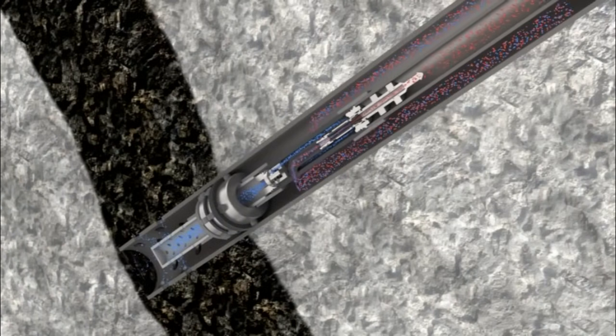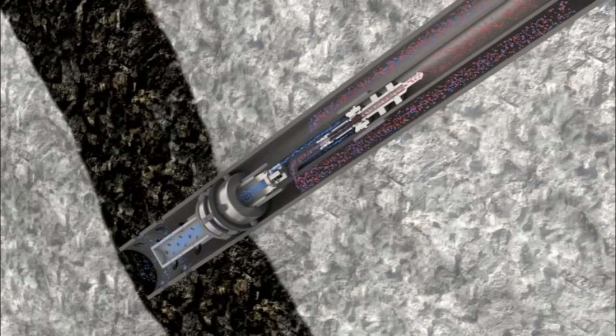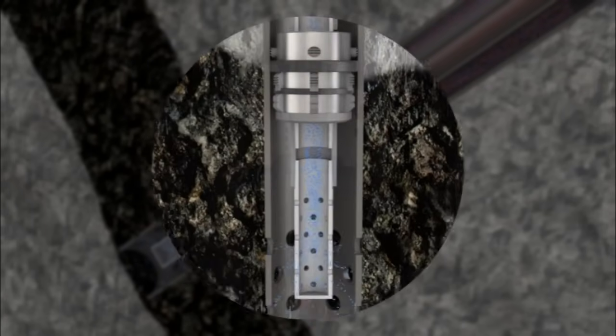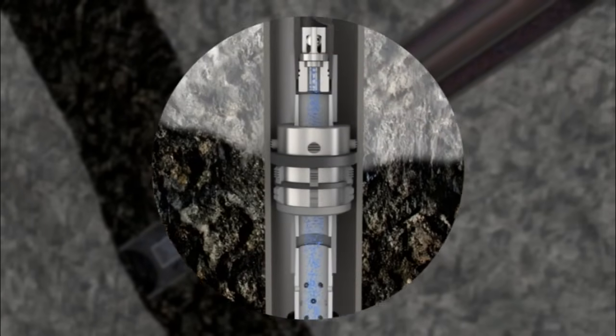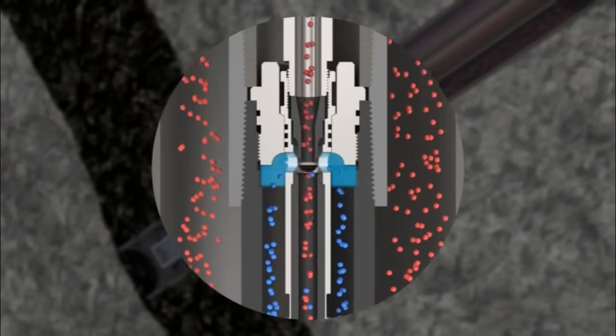The JJ Tech jet pump's performance stems from its ability to use one fluid to move another fluid. The pump nozzle creates a venturi effect at the intake. The resulting vacuum pulls produced fluid into the pump. The intake directs the produced fluid into the jet.